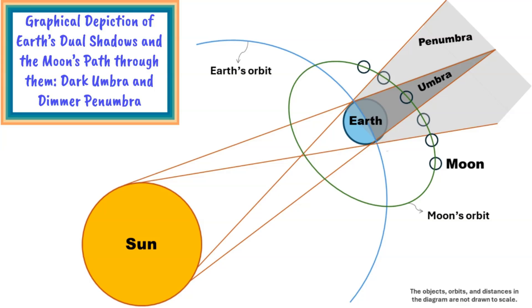The diagram shown here outlines the Moon's path through these shadow components. The Moon initially enters the penumbra, experiencing a partial obstruction of sunlight. As it progresses, it reaches the dark umbra, where it is entirely deprived of direct sunlight. After this phase, it exits the umbral shadow, re-enters the penumbra region, and finally emerges from the Earth's shadows.